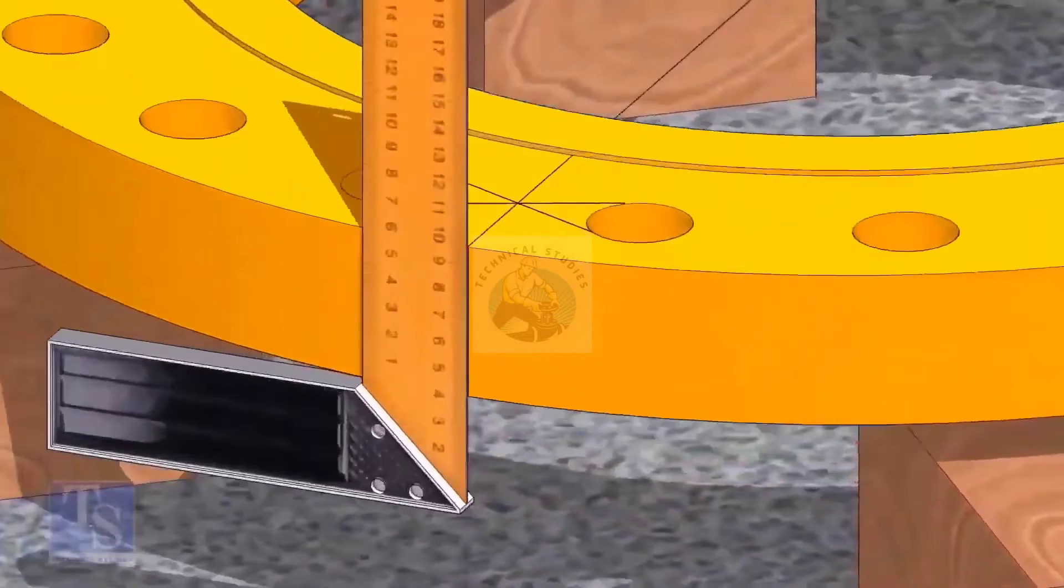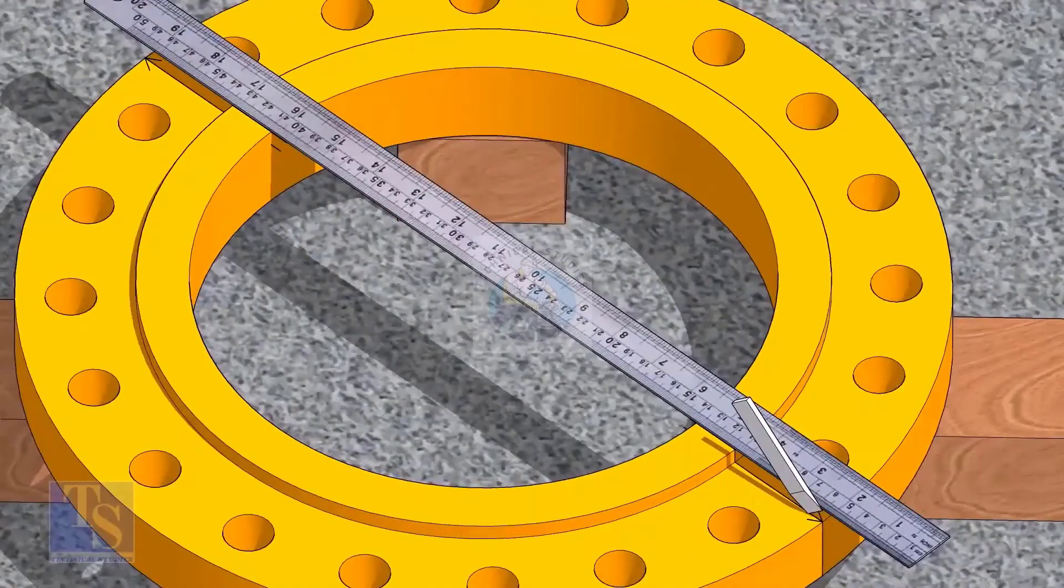Now transfer the center line to the sides of the flange. Overturn the flange and transfer the center line on the back side of the flange.